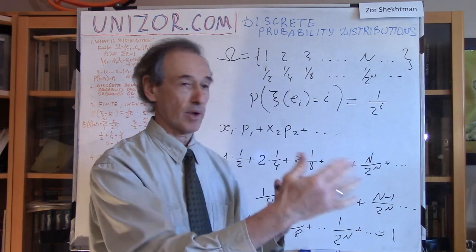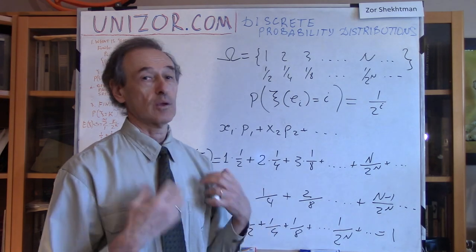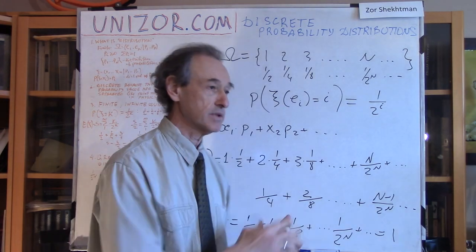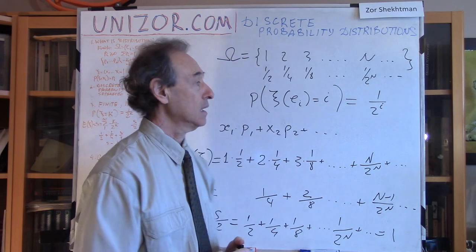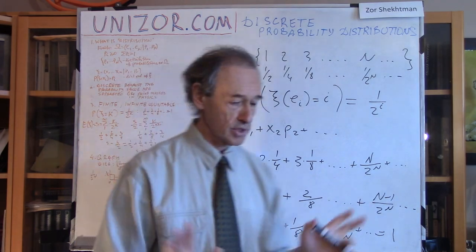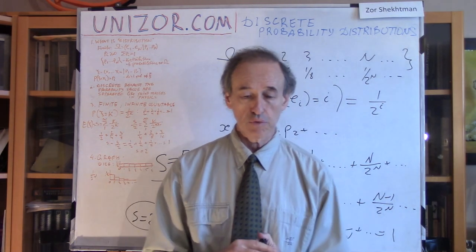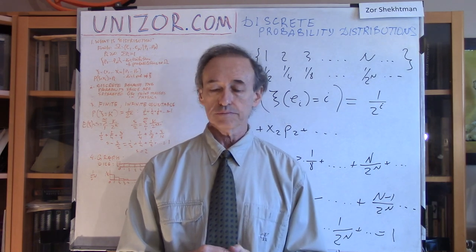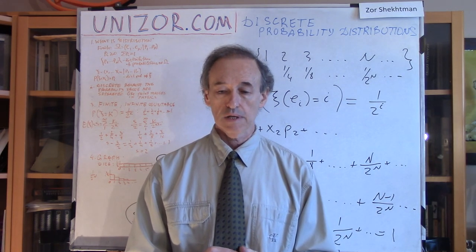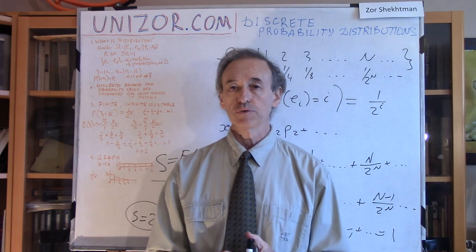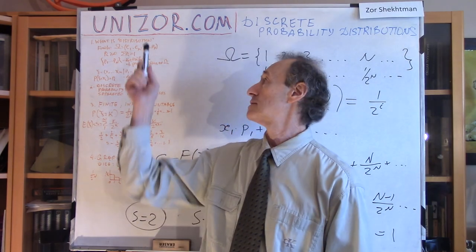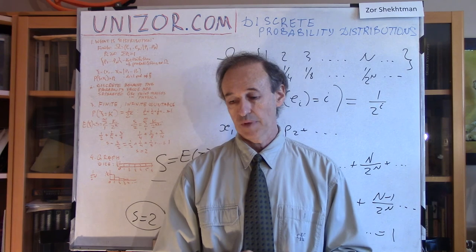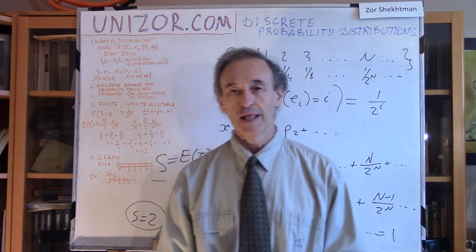Probabilities are still separated from each other, and this is why it's called discrete — so this is an infinite discrete distribution. That's it for today. Next lecture will be about continuous distribution, which is a little bit more difficult. Try to read the notes for this lecture on unizor.com — I strongly recommend you to do it. Thanks very much and good luck.